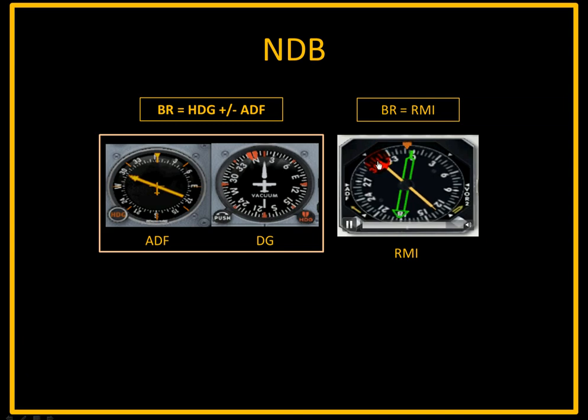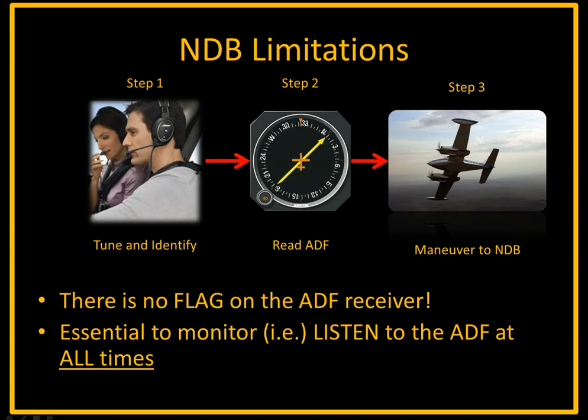So how are we going to use the ADF and NDB? It's important to note that there's no flag on the ADF receiver like there is on a VOR receiver. The only way to know you have a signal from the NDB is to listen for that Morse code, and you need to consistently and persistently listen for that signal — you don't want to hear it once and then ignore it for 10 miles when the station may have gone off or the signal become unreliable. So we're going to tune in and identify first, read the value on the ADF, and depending on the type, interpret the reading accordingly, then maneuver the aircraft to the NDB.